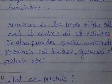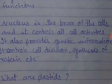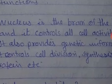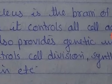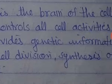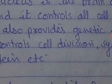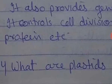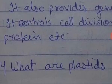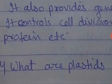Define the nucleus, state its main function. Nucleus is the brain of the cell and it controls all cell activity. It also provides genetic information. It controls cell division, synthesis of protein, etcetera.